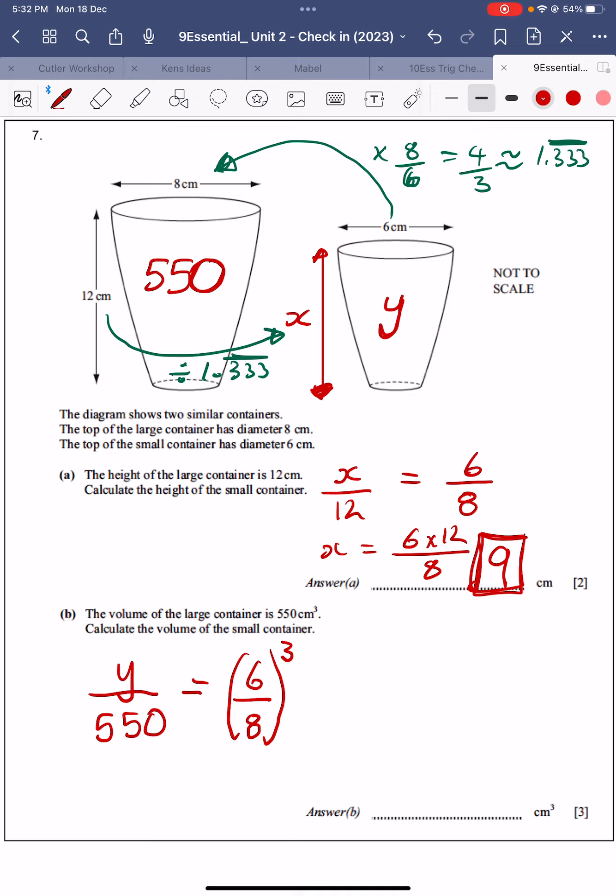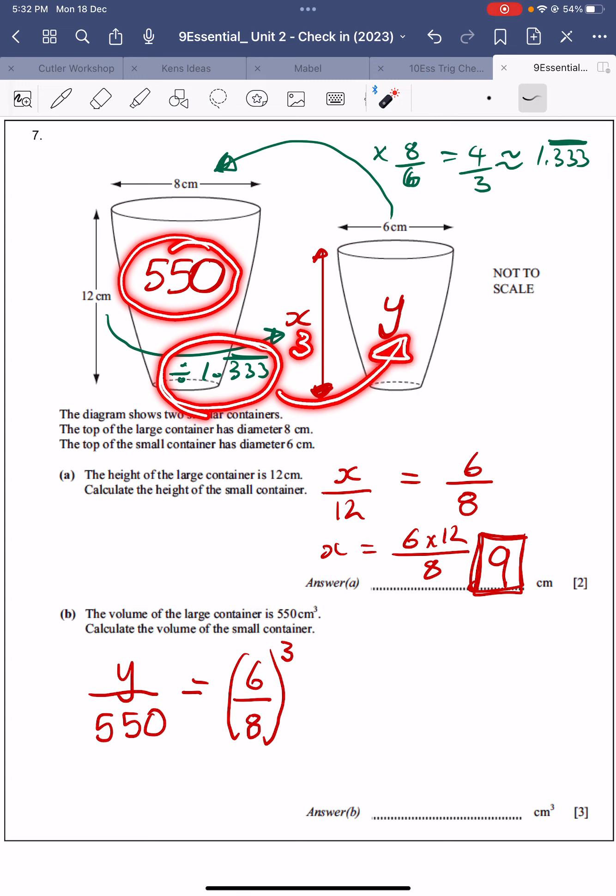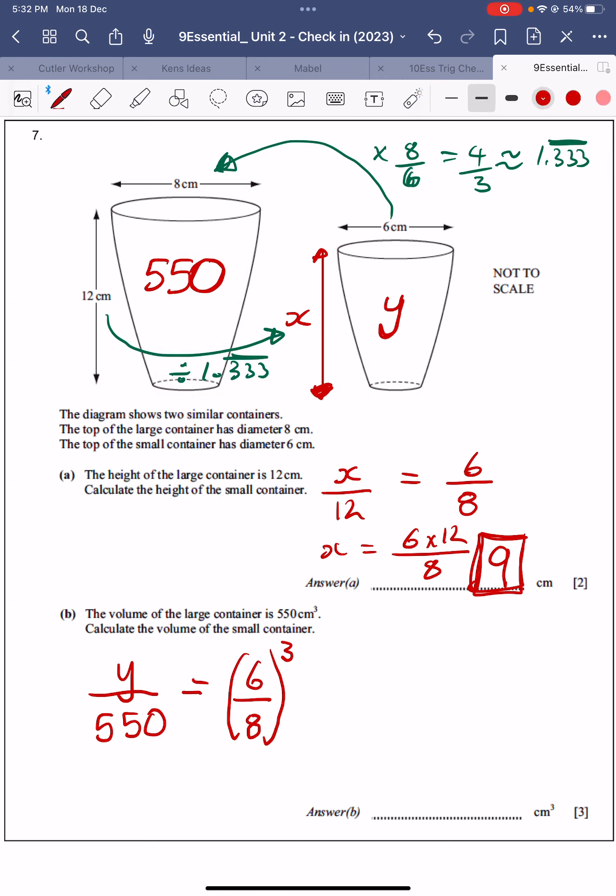Of course, we can do it a different way. We could say the 550 divided by 1.333333 to the power of 3 will give us the y here. If you do it the scale ratio way, then to finish it off, we've got 6 eighths cubed. This can be simplified as a fraction, times the 550.